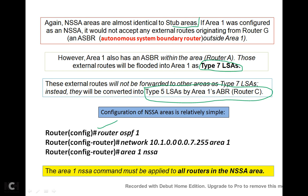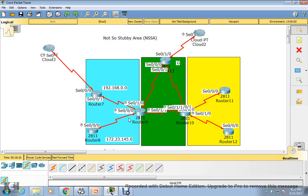First we will have to enable the OSPF process ID, then add the network statement — I've taken 10.1.1 as an example here. The third command is 'area 1 nssa'. One important thing to be aware of: the 'area 1 nssa' command must be applied to all routers in the NSSA area. This command is mandatory to be configured on all routers.